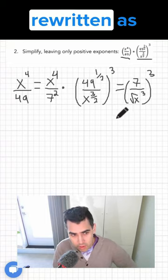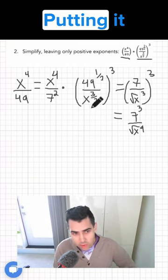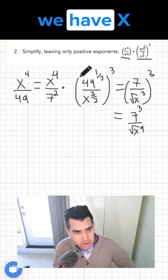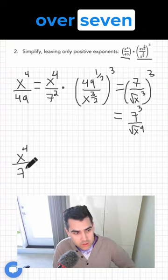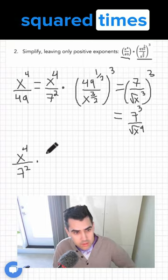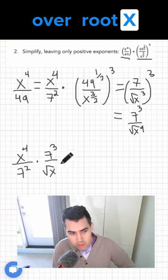And that can also be rewritten as root x to the 9. Putting it back together, we have x to the 4 over 7 squared times 7 cubed over root x to the 9.